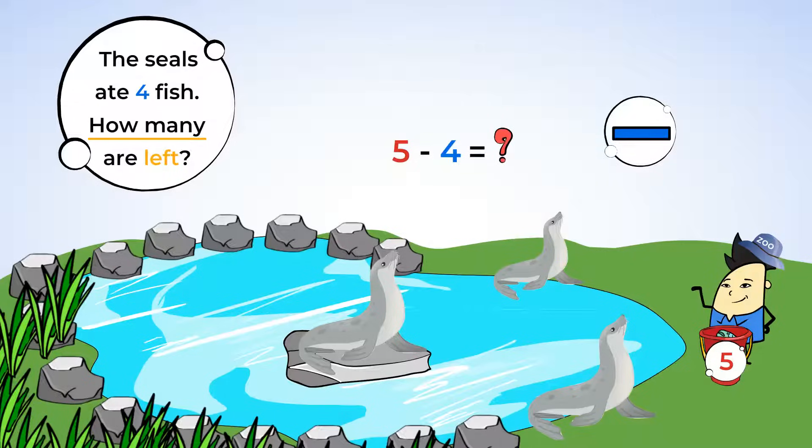Let's use the five frame again. Here's the five frame. Now, we need five circles for the five fish. So, that means the five frame is full. Now, four fish were eaten. So, we can take away four of the circles or cross them out. How many circles are left?